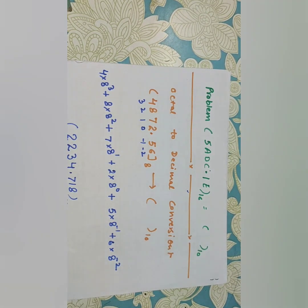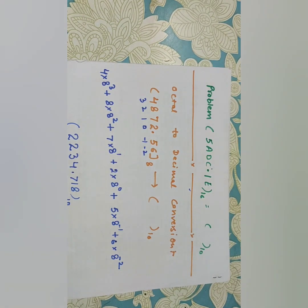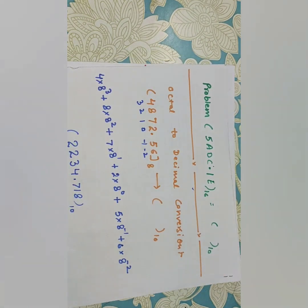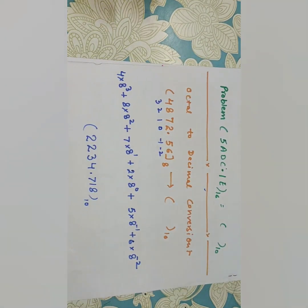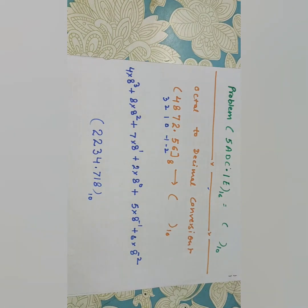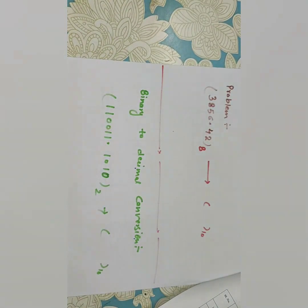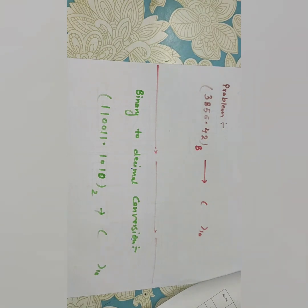That is your answer for the octal to decimal conversion. You can check from your calculator as well. In octal the base is 8, so we use 8 as the base throughout. Now this is your problem to do: convert the given octal number to decimal.